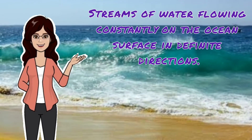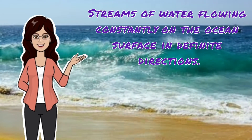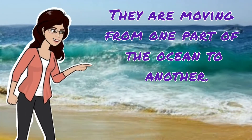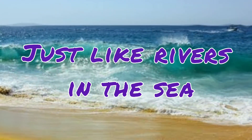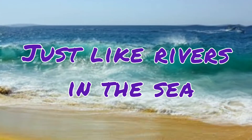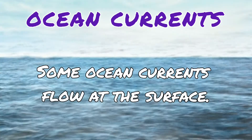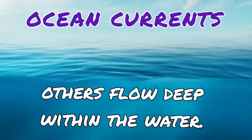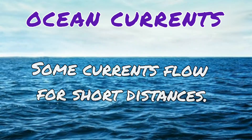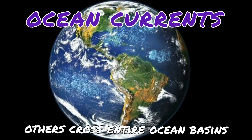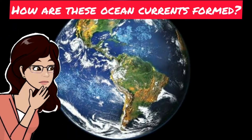Look at these streams of water — they are flowing constantly on the ocean surface in definite directions, moving from one part of the ocean to another, just like rivers in the sea. Yes, you guessed it right: they are ocean currents. Some ocean currents flow at the surface, others flow deep within the water. Some currents flow for short distances, others cross entire ocean basins and even circle the globe. But how are these ocean currents formed?